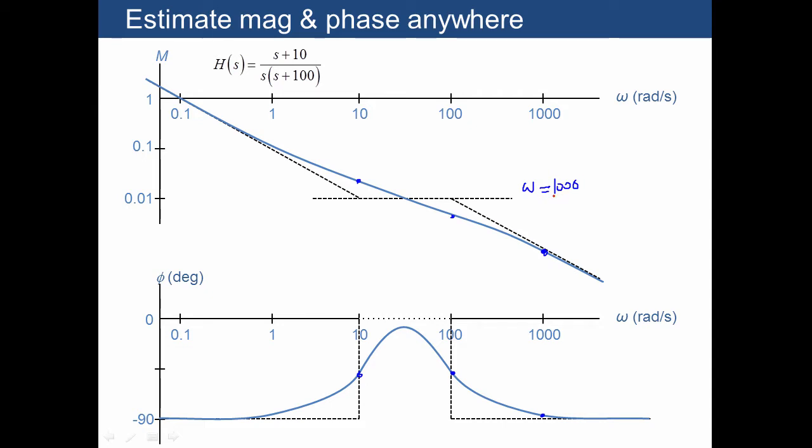Imagine we're plugging in omega equals 1,000. Our attitude would be that when we add 10 to j times 1,000, that's very close to just j times 1,000. The 10 doesn't really matter in comparison to the 1,000. Even the 100 added to j times 1,000, you could treat as being very close to j times 1,000. We have j times 1,000 for this term. If you treat this as a rough approximation, these j times 1,000 cancel each other. All we're left with is 1 over 1,000 for the magnitude. And because we have 1 j in the denominator, this would be roughly negative 90 degrees.